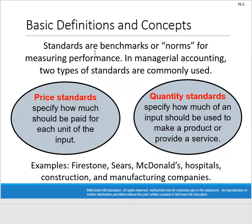Some basic concepts as we get started. The title of the chapter is Standard Costs and Variances. Standards are essentially our norms — benchmarks for measuring our performance. In managerial accounting we typically have two types of standards: price standards, which specify how much should be paid for each unit of input, and quantity standards, which specify how much of an input should be used to make a product or provide a service. The textbook overcomplicated these two simple concepts by renaming them.